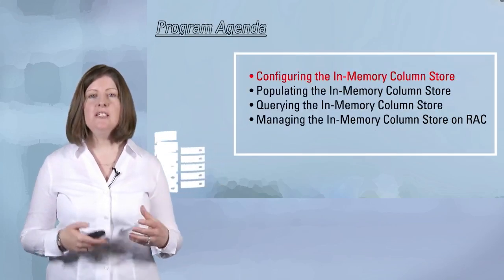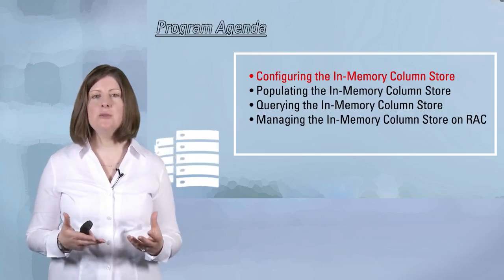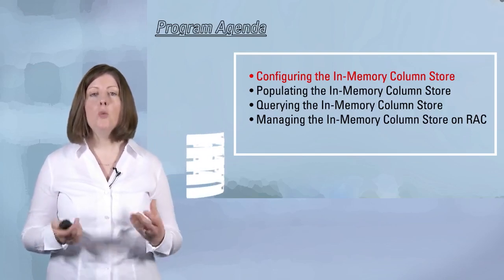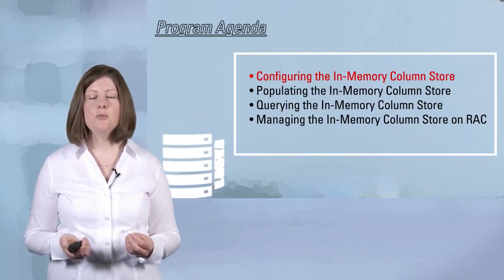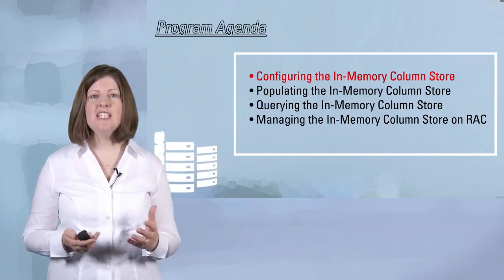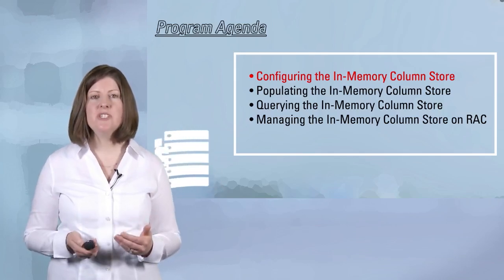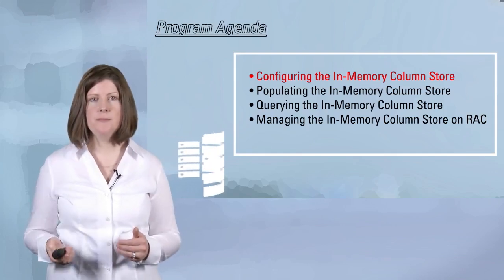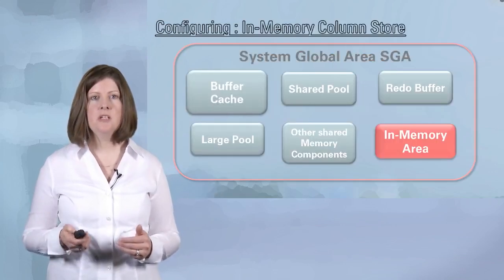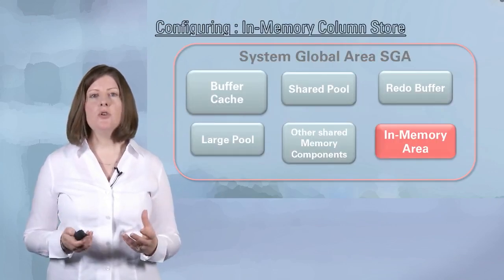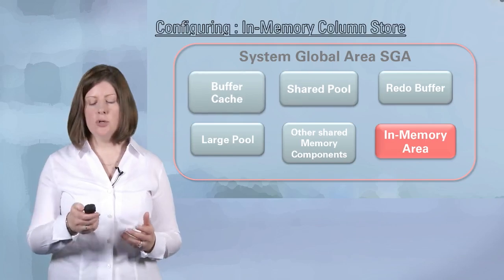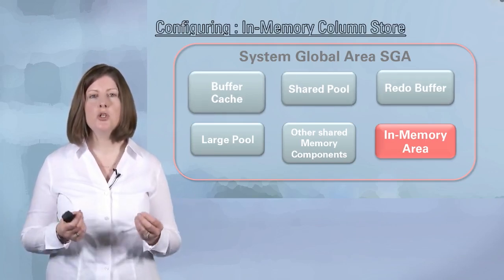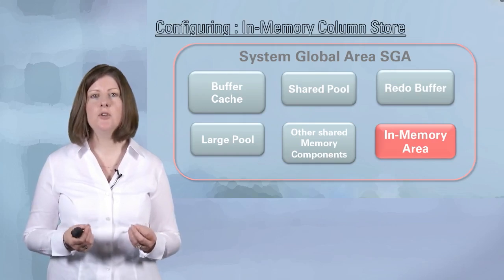I'm going to begin today's session by talking about how you can configure the column store, what initialization parameters need to change, and what things you need to bear in mind when it comes to allocating a column store in your environment. The in-memory column store is a new component or pool inside of the SGA, or the shared global area, of your database.